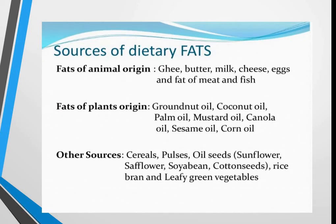Let's talk about sources of dietary fats. Fats of animal origin include ghee, butter, milk, cheese, eggs, and fats from meat and fish. Fats of plant origin include groundnut oil, coconut oil, palm oil, mustard oil, canola oil, sesame oil, and corn oil.